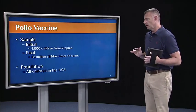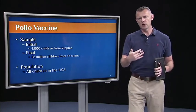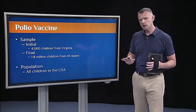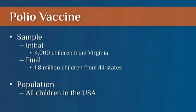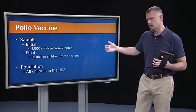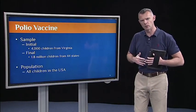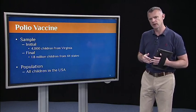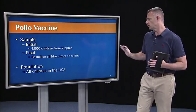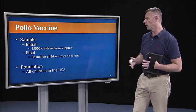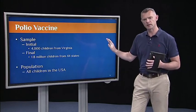So how did it work? To do experimental research, we need a sample and we need a population. What was the population? The population was all children in the USA — and actually, all children worldwide, but these initial studies were funded by the U.S. government. So the population is defined as all children in the U.S., which is who Salk was hoping he could generalize his vaccine results to. The sample, of course — he couldn't get his hands on all children in the U.S. So the sample initially was just 4,000 children from the state of Virginia.